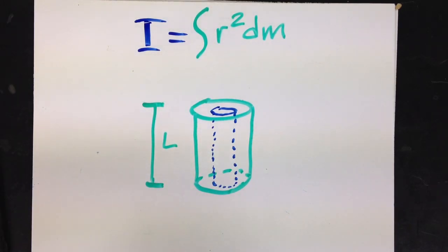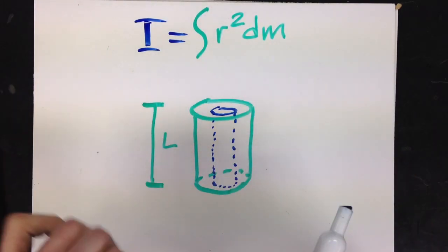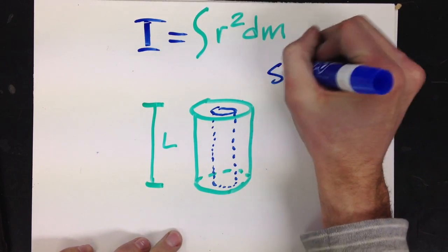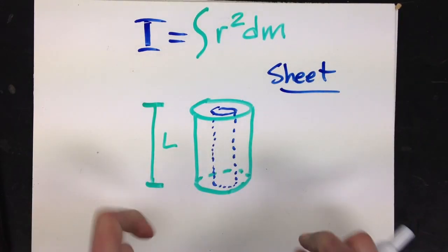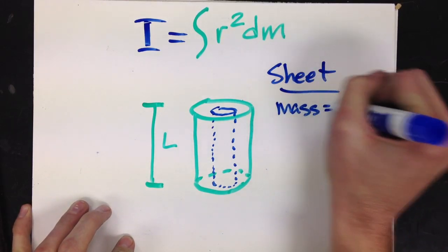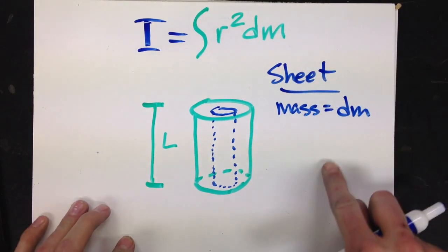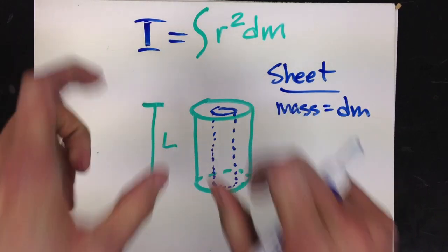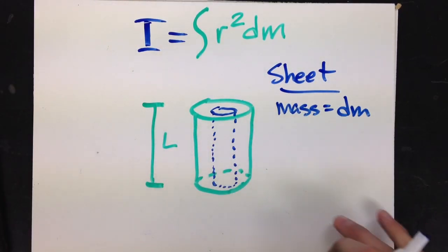Okay, so let's talk about the components of my sheet. Let's say that the sheet or the thin section of cylinder that I am investigating has a mass that is just dm, a very small, infinitesimally small mass dm.